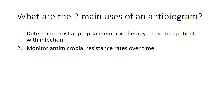What are the two main uses of an antibiogram? First, to determine the most appropriate empiric therapy to use in a specific patient with an infection. Second, to monitor antimicrobial resistance rates over time.